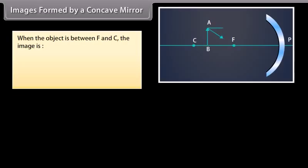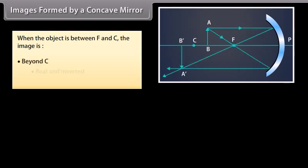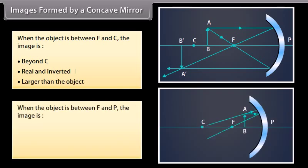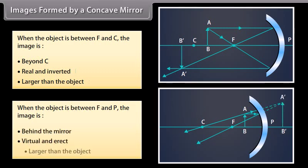When the object is between F and C, the image is beyond C, real and inverted, and larger than the object. When the object is between F and P, the image is behind the mirror, virtual and erect, and larger than the object.